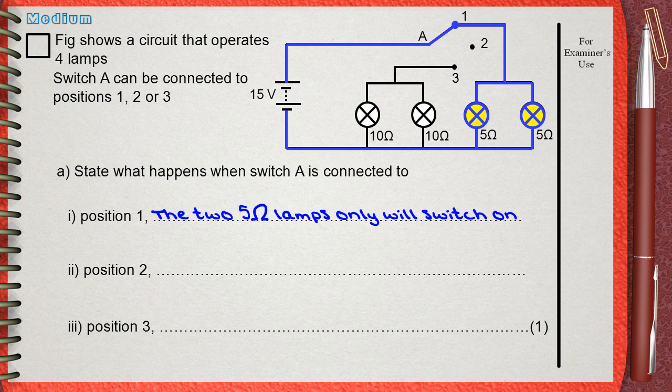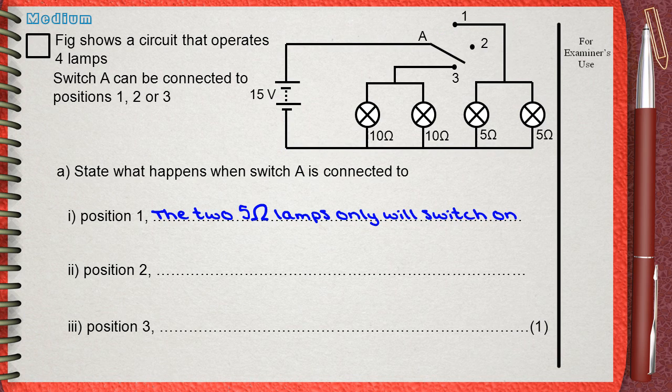Question 2 asks about what happens if switch A is at position 2. If the switch is at position 2, unfortunately there will be no circuit closed between the positive pole and the negative pole of the battery. This is not a circuit; current will not flow. Simply, the answer will be all lamps will be switched off.